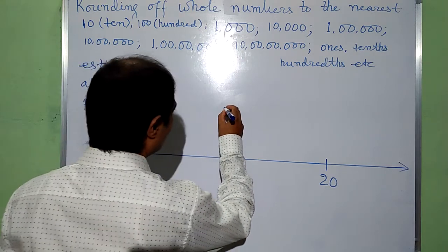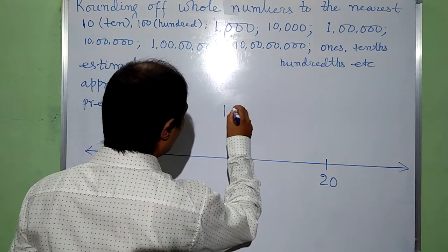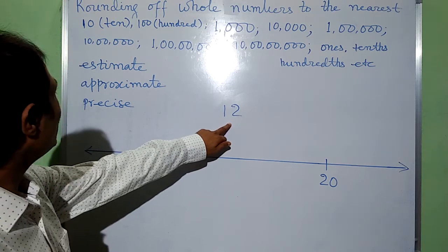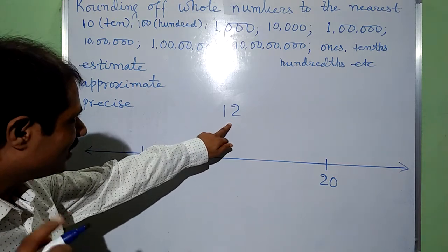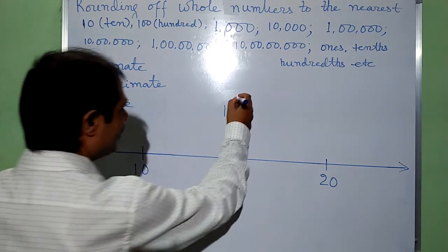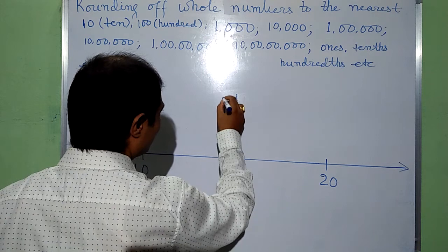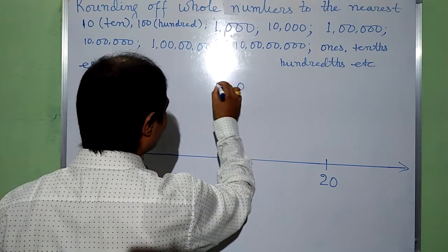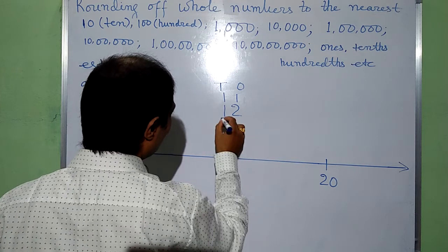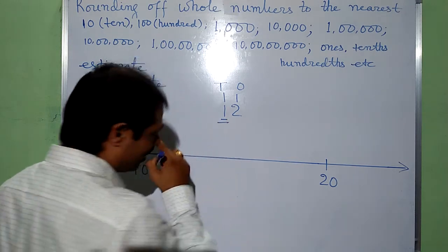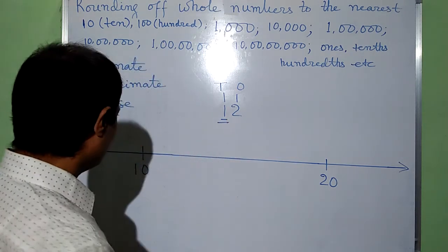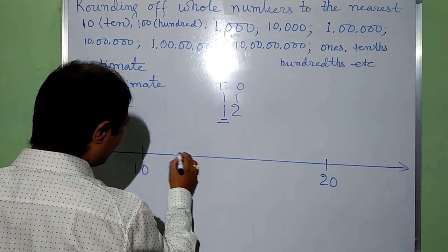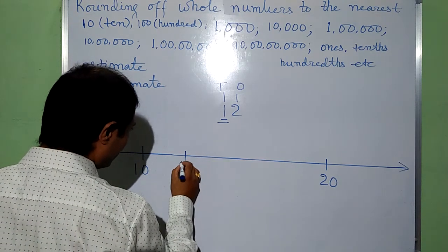Suppose we are given to round 12 to the nearest 10. This is at the 1's place, this is at the 10's place. We have to round this one. On this number line, 12 will come here.